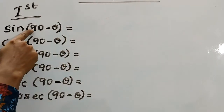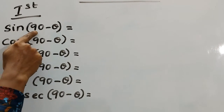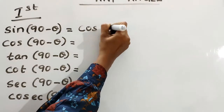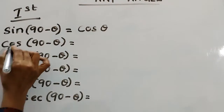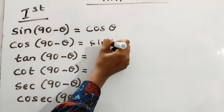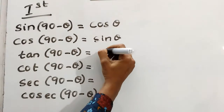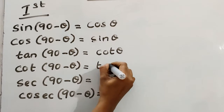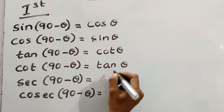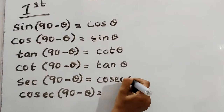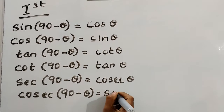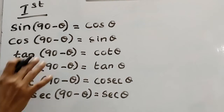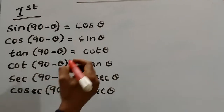90 is an odd multiple of 90, so we must change the trigonometric ratios. Sine will change to cos, so the answer is cos θ. Cos will change to sine. Tan will change to cot. Cot will change to tan. Sec will change to cosec. Cosec will change to sec θ. And since we are in the first quadrant, all answers are positive.